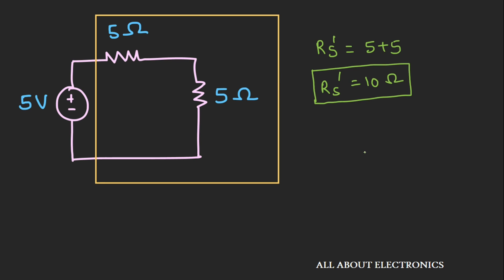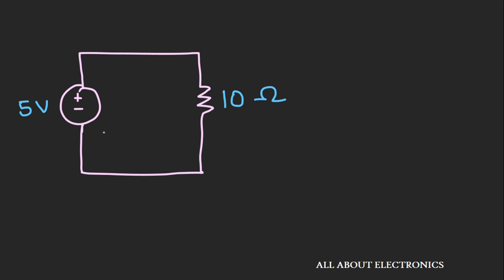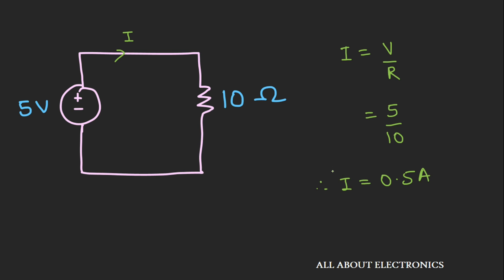Now the circuit has a 15V voltage source connected with a 10-ohm equivalent resistance. The current I can be found using Ohm's law: I = V/R = 5/10. That means I = 0.5 Ampere.